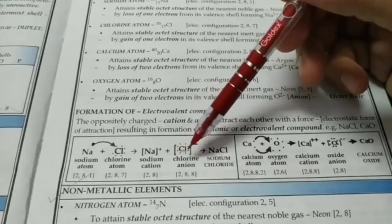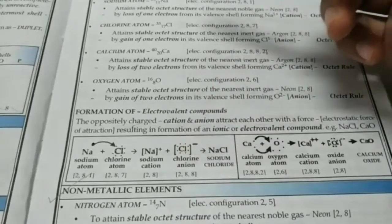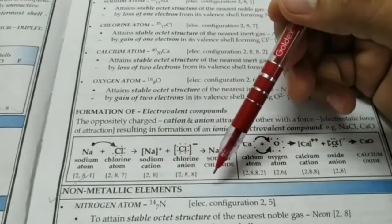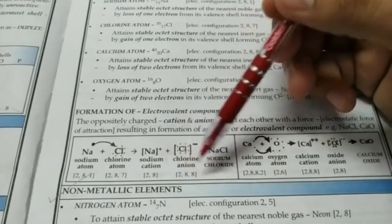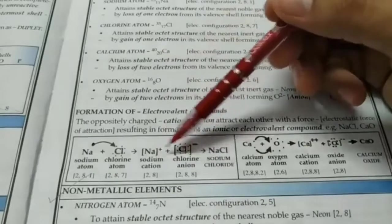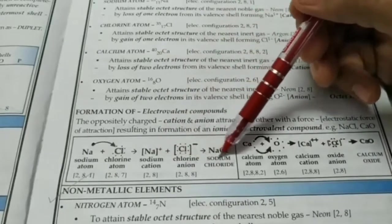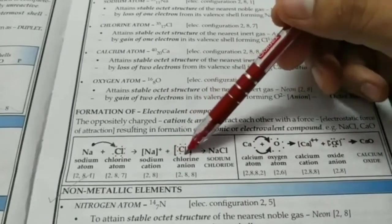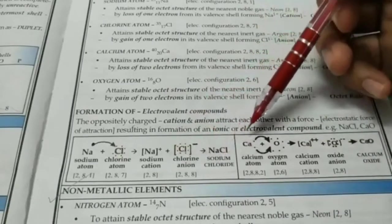So sodium forms a cation and chlorine forms an anion. Make sure you write the brackets also. This is called the cross and dot structure where the dots represent electrons. So now both of them are stable, 2,8, 2,8, they have acquired the electronic configuration of the nearest noble gas. However, now they are charged and opposite charges attract each other. So they stick to each other to form NaCl. A molecule of sodium chloride is formed and since there are ions involved, it is called an ionic compound or an electrovalent compound.